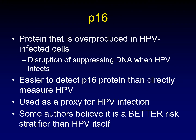So if we're talking about HPV-16, what is p16? p16 is different — it's a protein that becomes overproduced in cells infected by HPV. There is a disruption of some suppressing DNA when HPV is inserted into the genome, and you end up with overproduction of this protein. It turns out it's much easier to detect this p16 protein than to directly measure HPV. Thus, p16 is used as a proxy for HPV infection. It's not perfect, but it's a pretty close proxy, and some authors believe it might be a better risk stratifier than HPV itself.